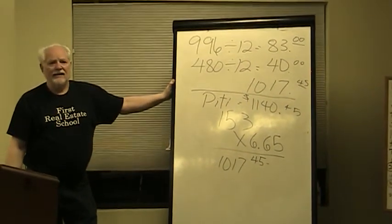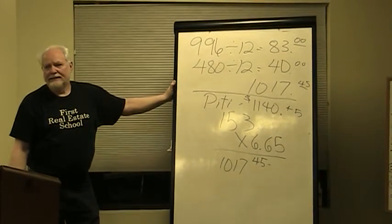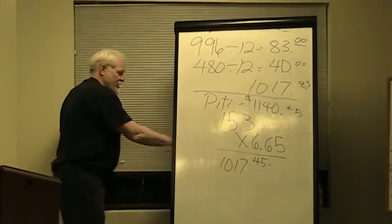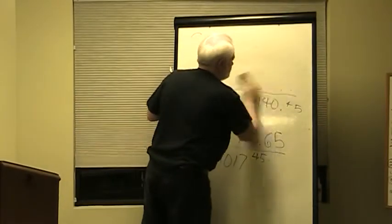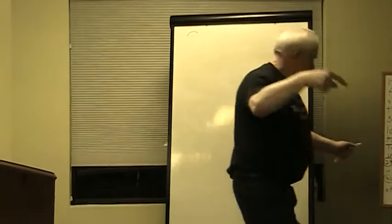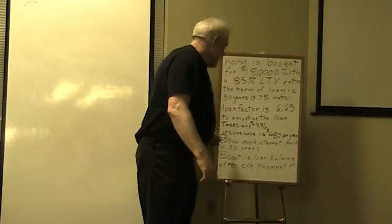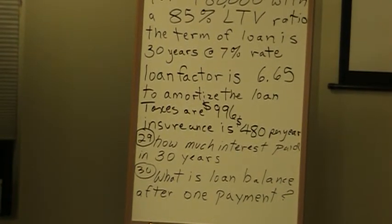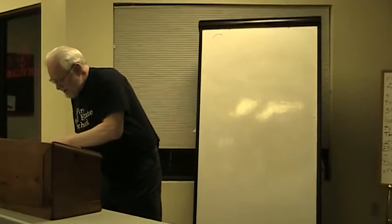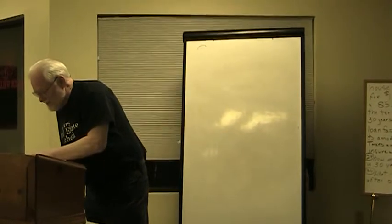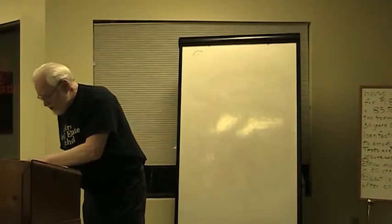Any questions? Now, the next one. How much is the interest paid in 30 years? We're going to mail $1,017.45 to the mortgage company every month for how many months? 360. That's 12 months a year for 30 years. So how much money is going to leave our pocket and go into their pocket? $366,282.